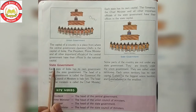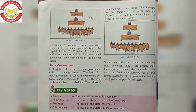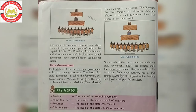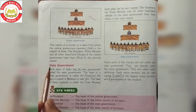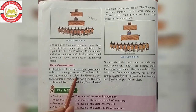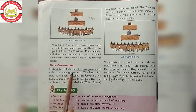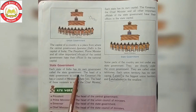Now next topic is State Government. Ab state government kyun banayi gayi hai? Central government ka matlab toh samajh mein aa gaya ki wo poori country ko control kar raha hai. Each state of India has its own government called the state government. Har ek state jo hamari India mein hai — 28 states — har ek state mein apna ek government hai jisko name diya gaya hai State Government.